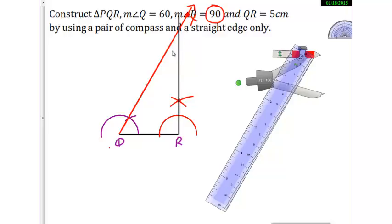Where these two lines meet. Let me name here P. So this is my triangle PQR as per need. Angle Q 60, angle R 90, QR 5.